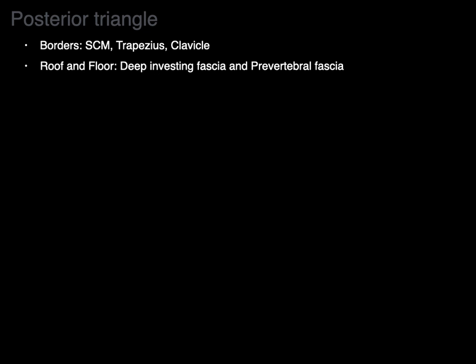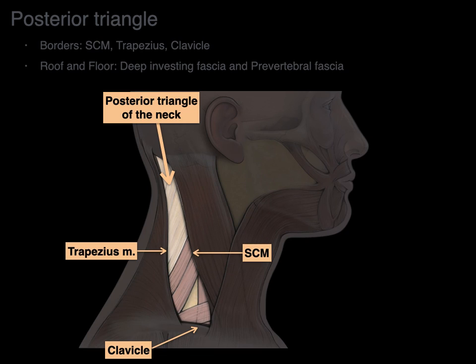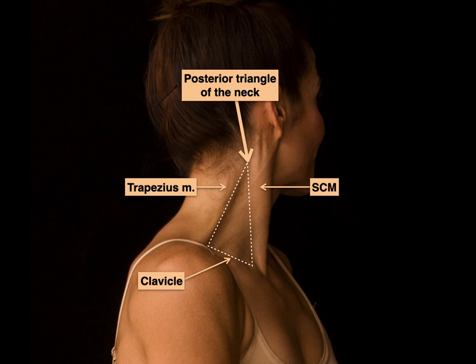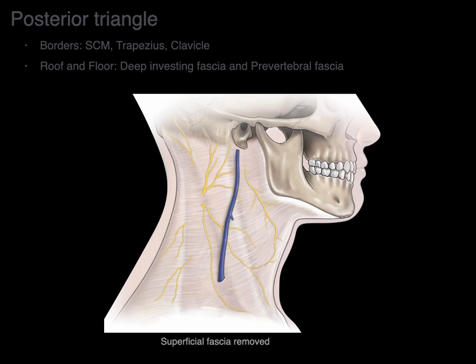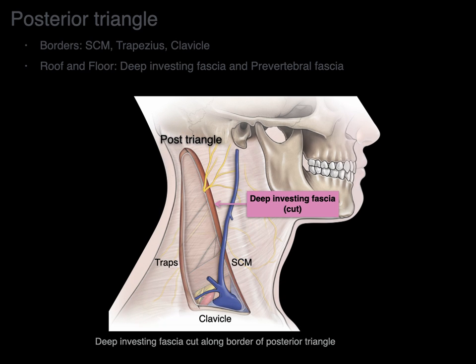Let's go to the posterior triangle. Its borders are the sternocleidomastoid, trapezius, and clavicle, and the roof and floor are the deep investing and prevertebral fascias. Here we have a lateral view — we find the posterior border of the sternocleidomastoid, anterior border of the trapezius, and the clavicle — and there is the posterior triangle of the neck. The roof of the posterior triangle is the deep investing fascia. Now let's take a scalpel and cut along that and open it up — you see the cut edge of the deep investing fascia — and the floor of the posterior triangle is the prevertebral fascia of the neck.